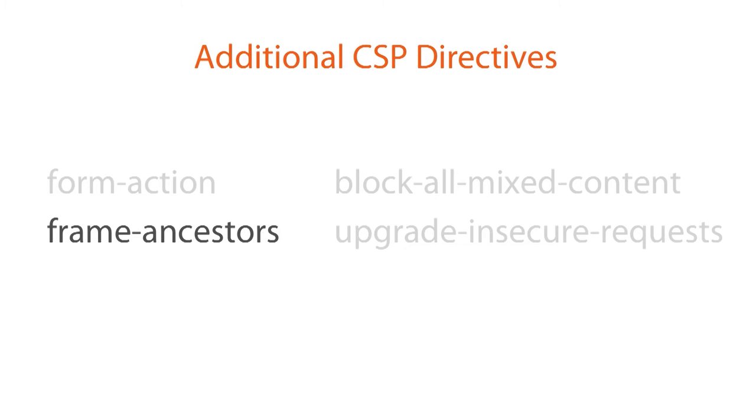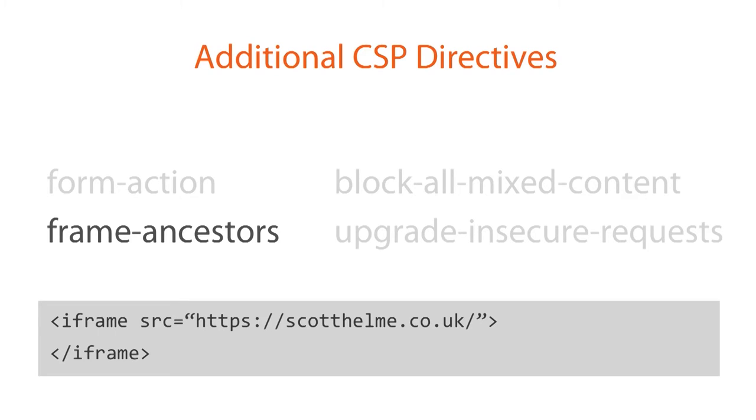We have frame ancestors. Some of you may have heard of the X-Frame-Options header — it allows you to tell the browser whether or not you want your site to be framed by other sites, often used as a protection against clickjacking. But X-Frame-Options is kind of an on-off setting, not very flexible. With frame ancestors in CSP, we can specify a list of locations that are allowed to frame us, and everybody else is blocked by default. Since CSP is per-page, you can issue this on your login pages to stop them being framed by a third party, without interfering with areas of your site that legitimately need to be framed.